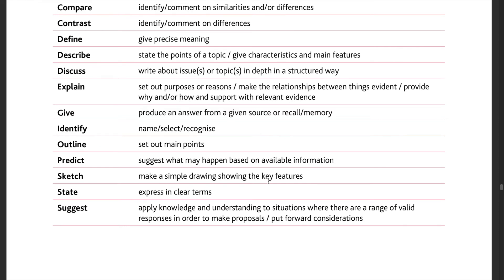Outline—over here it is where you set out the main points, example: outline the process transcription. Next we have the command word predict. You have to give your own prediction based on what the trend is like if it is a graph that is given—that is, suggestions that are based on available information.